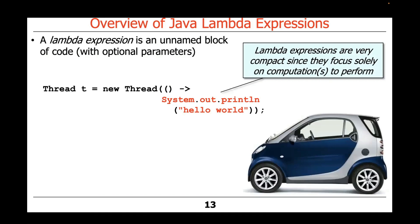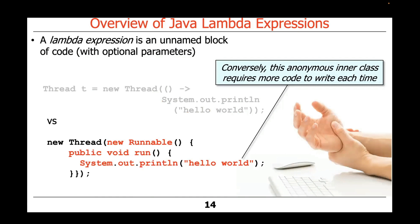Lambda Expressions are very compact since they only focus on the computation to perform and have almost no other syntactic overhead — what I like to call syntactic vinegar — which makes code more obscure. Conversely, here's how you could have written this code the old school way with an anonymous inner class, which requires more code: you have to say new Runnable, public void run, surround things with curly braces, and so on. So it's just more complicated and more carpal tunnel syndrome inducing.